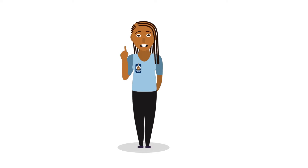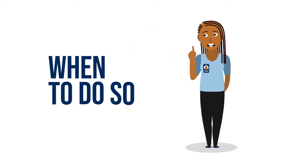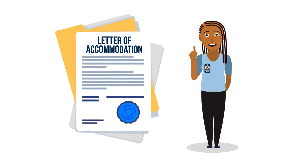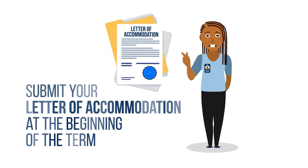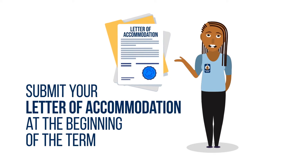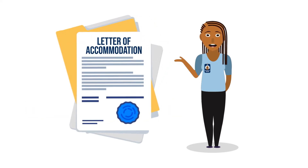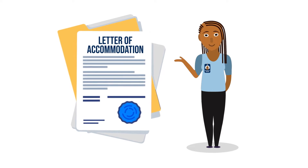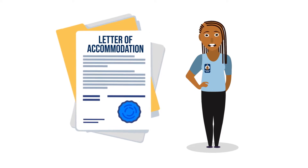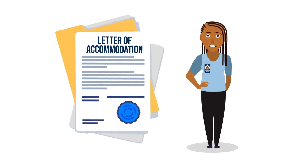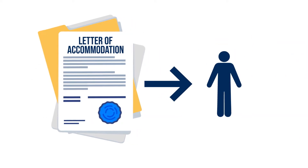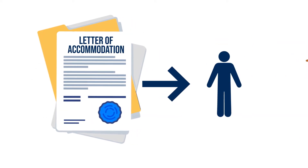If you feel comfortable speaking to your profs directly, the first thing to consider is when to do so. If you'd like to request your accommodations right away, submit your letter of accommodation at the beginning of the term and try to give them as much notice as possible if you need to miss a class, request an extension, or access accommodations. Some programs ask you to provide your letter of accommodation to a point person in your department or faculty. Speak with your Accessibility Advisor to review the steps for your program.